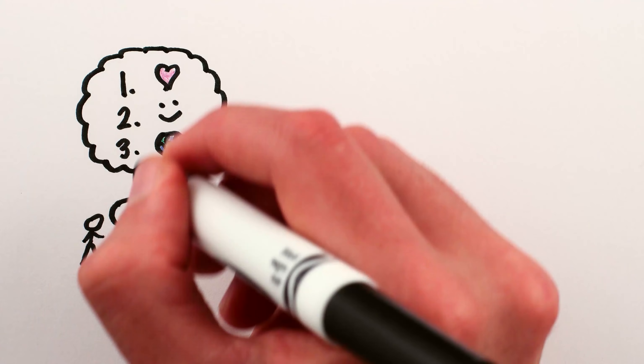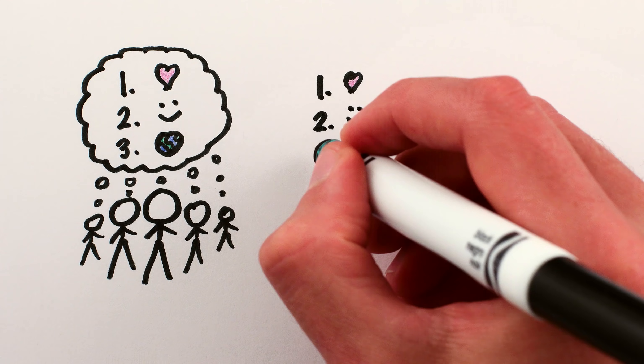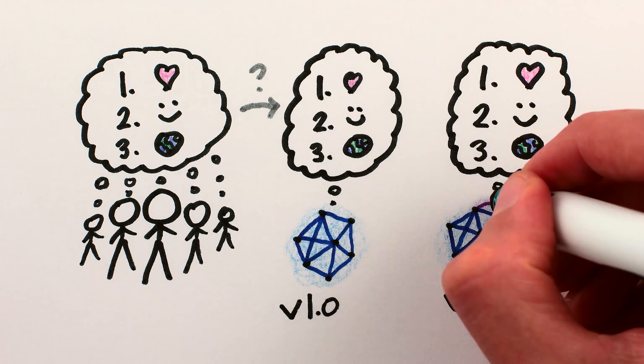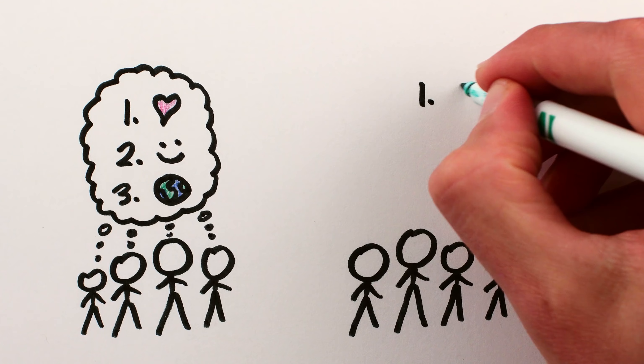For example, we'll need to figure out how to ensure machines learn the collective goals of humanity, adopt these goals for themselves, and retain the goals as they get ever smarter. And what about when our goals disagree?